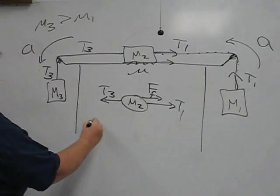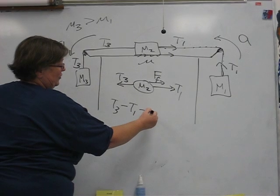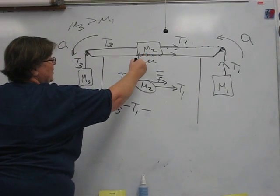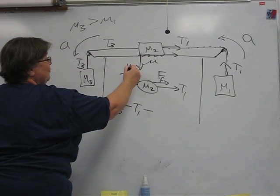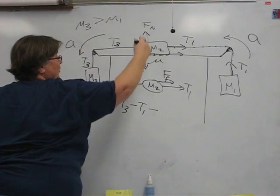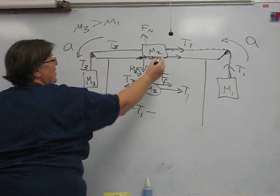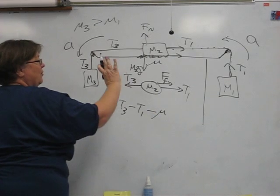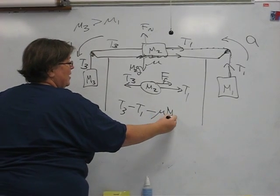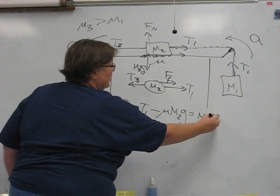So T3 minus T1 minus the frictional force, which in this case, the table feels the weight of M2, and therefore, the normal force is what the table pushes back on M2 with, and that's why mu times the normal force is such a nice model, M2G.